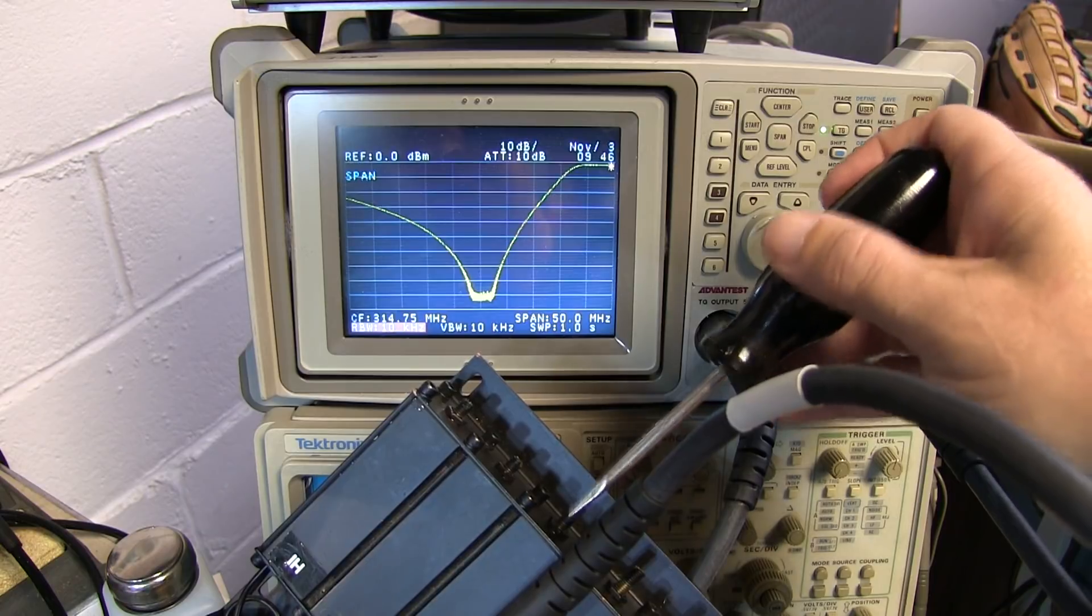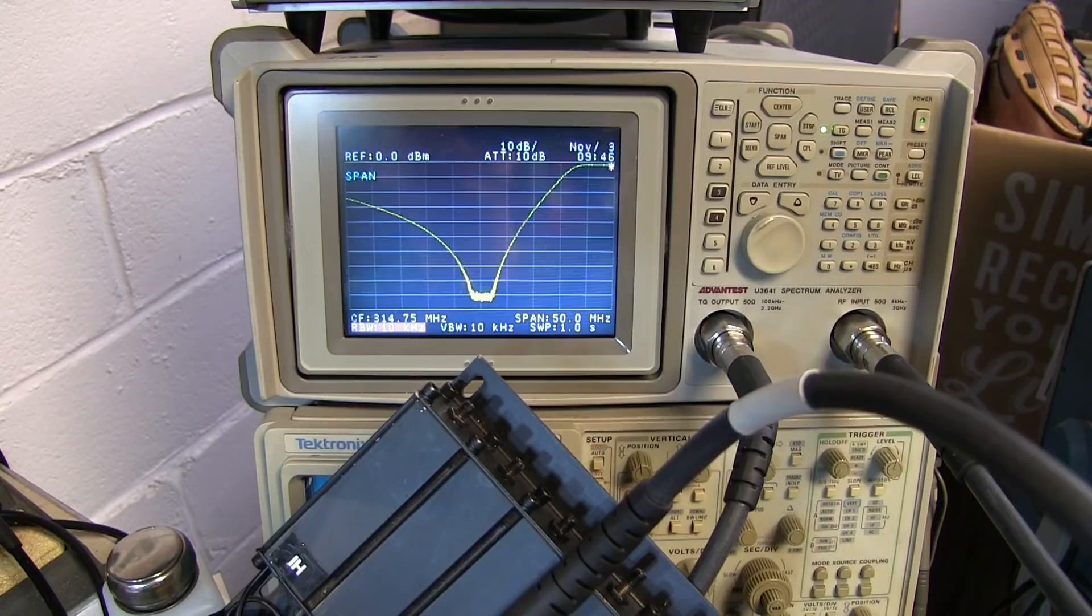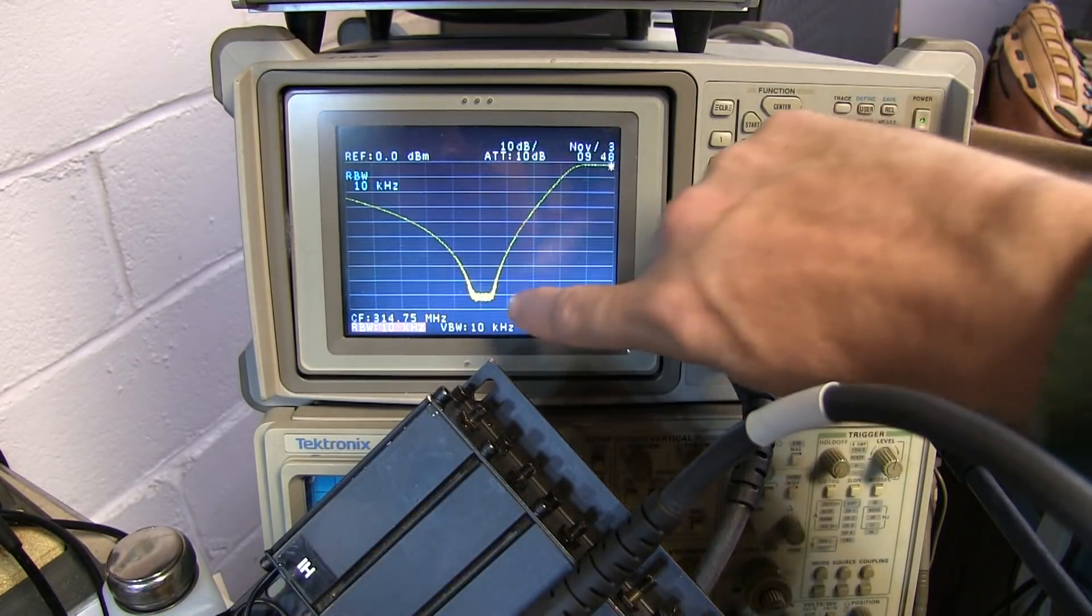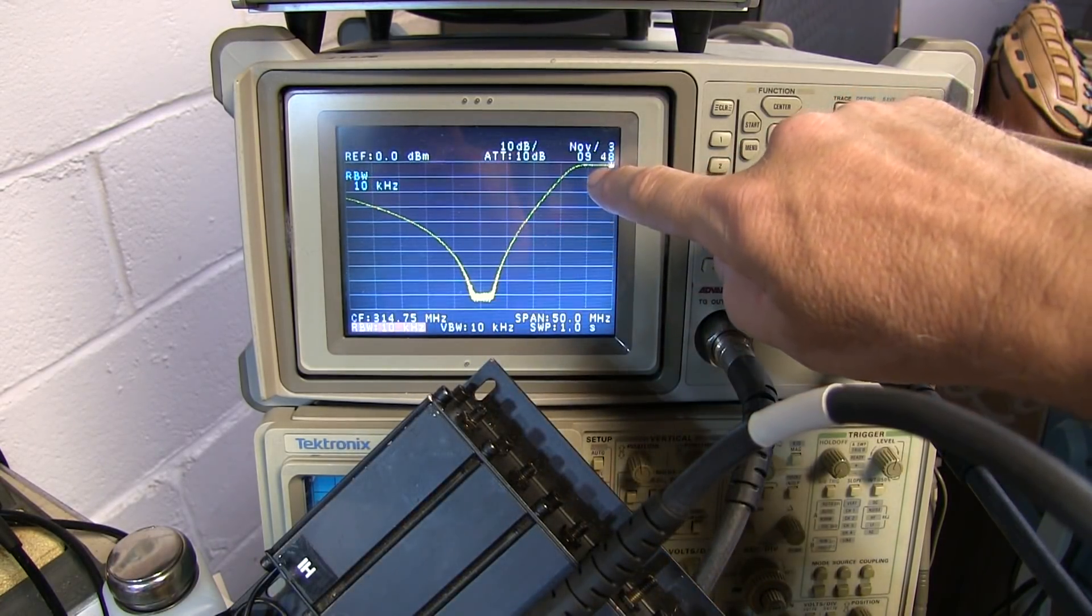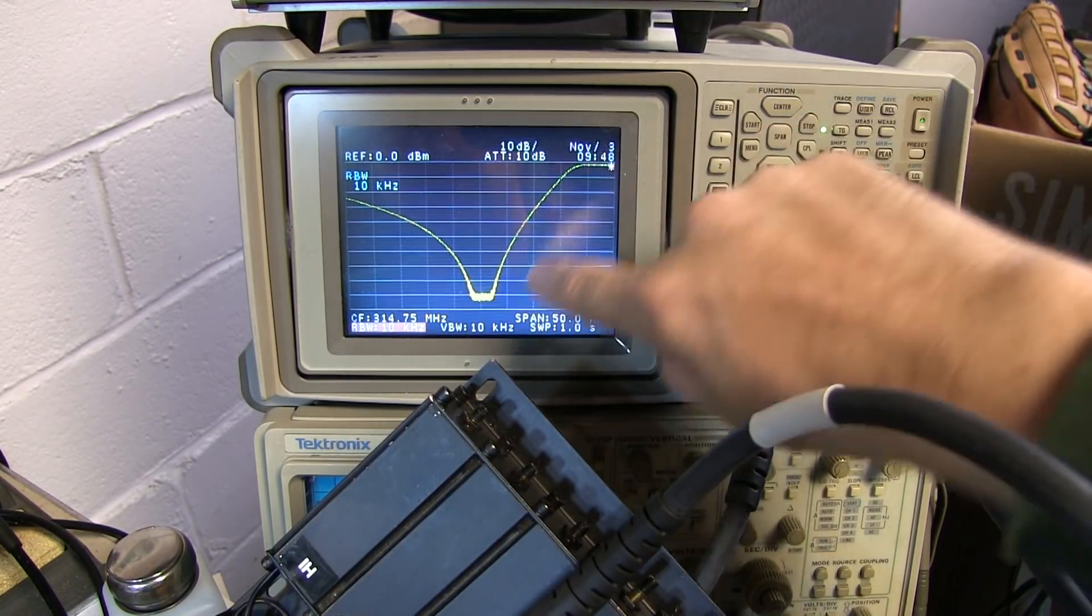But I can't really do much better than that with the noise floor where I have it. Now I've wound up with a notch that is literally about 90 dB down from my passband characteristic. So that's actually pretty good.